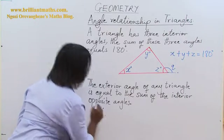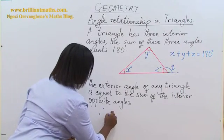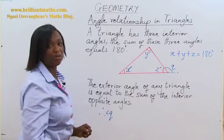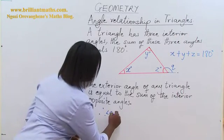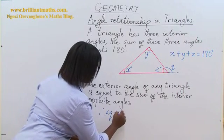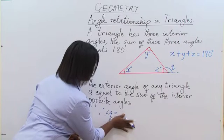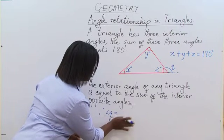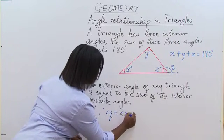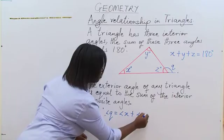This exterior angle equals the sum of X and Y. Therefore, the value of angle Q is equal to angle X plus angle Y.